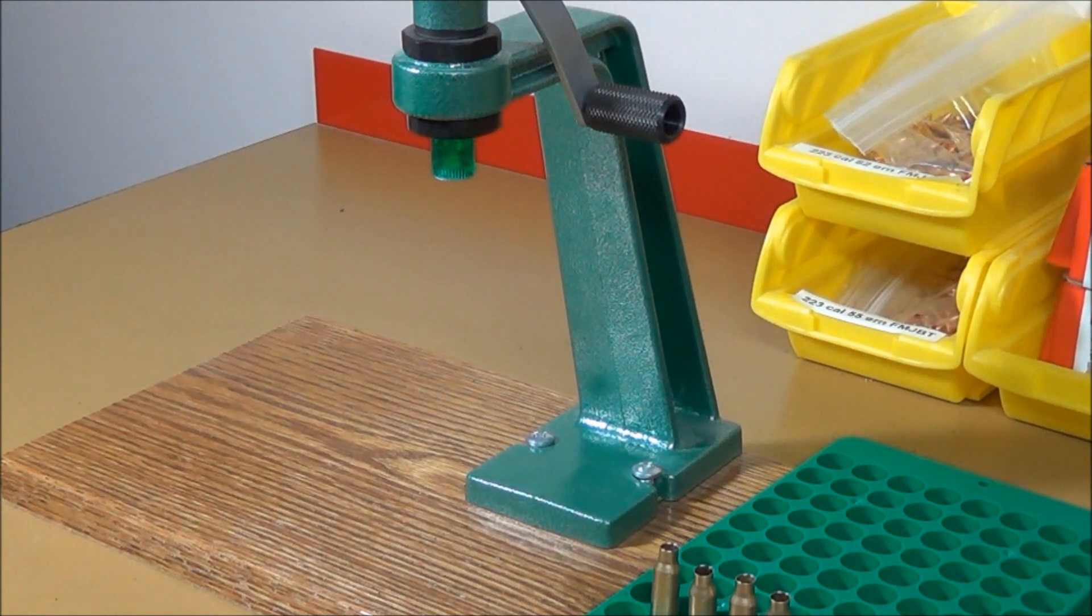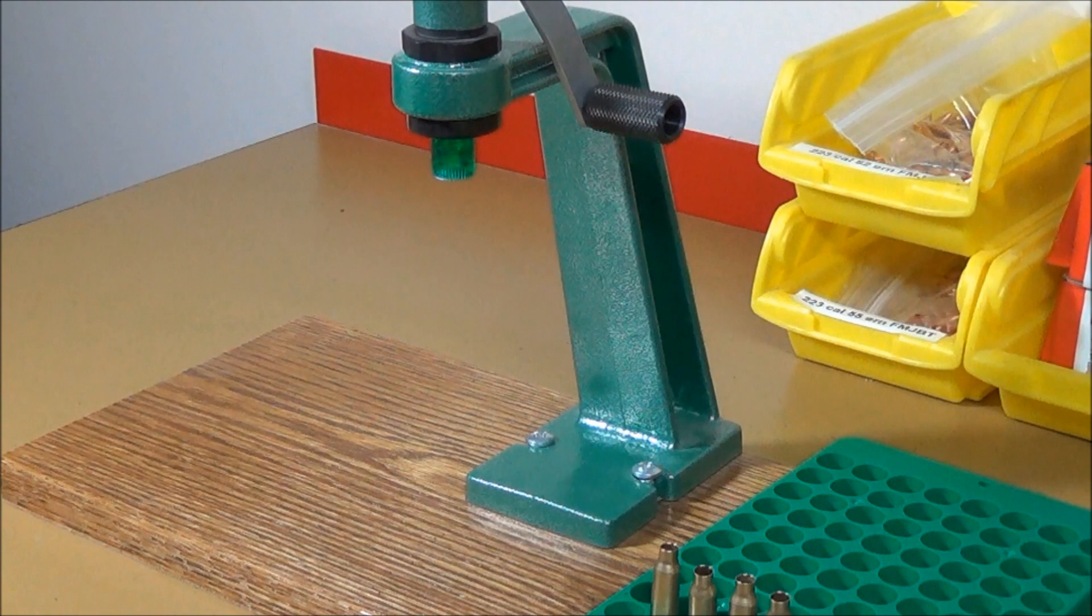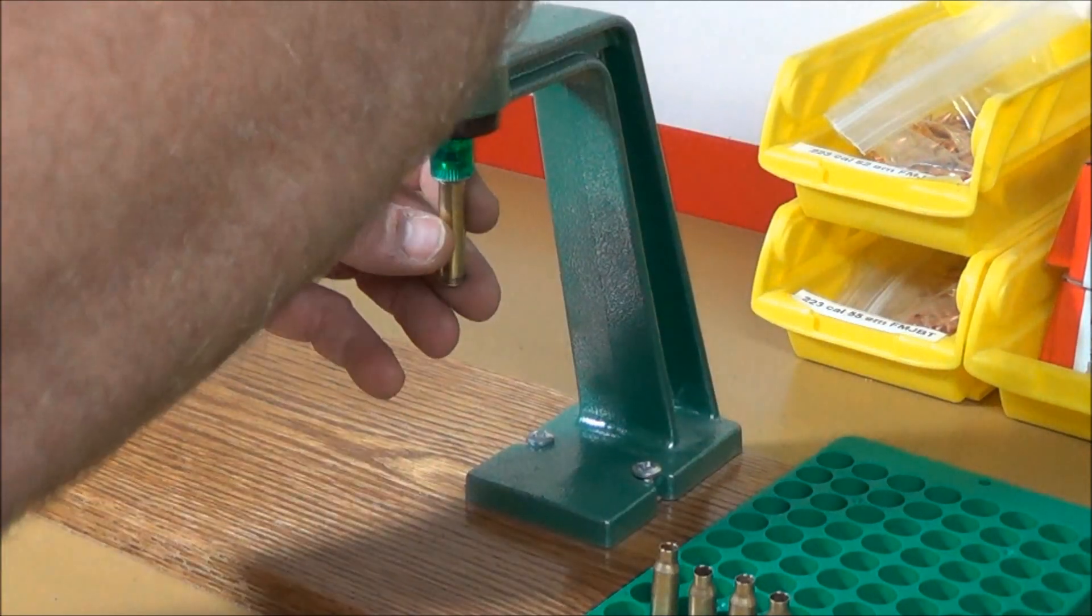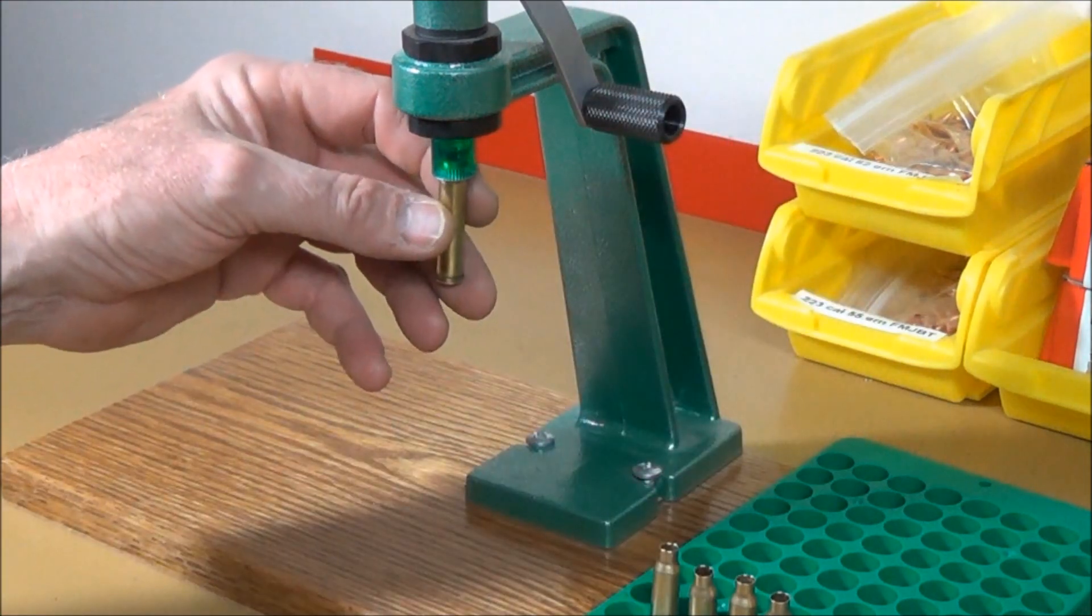Now we're going to go ahead and load up 24.2 grains of BLC-2 powder. I like this powder because it meters out really well. It seems to be very accurate. With a 62 grain bullet and 24.2 grains, I should be running at just around 2800 feet per second, which for my rifle seems to be pretty darn accurate. So we'll just go ahead and load up about five of these.